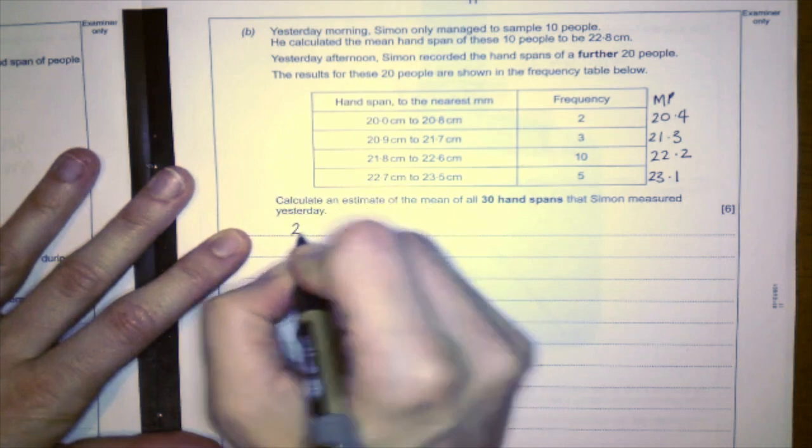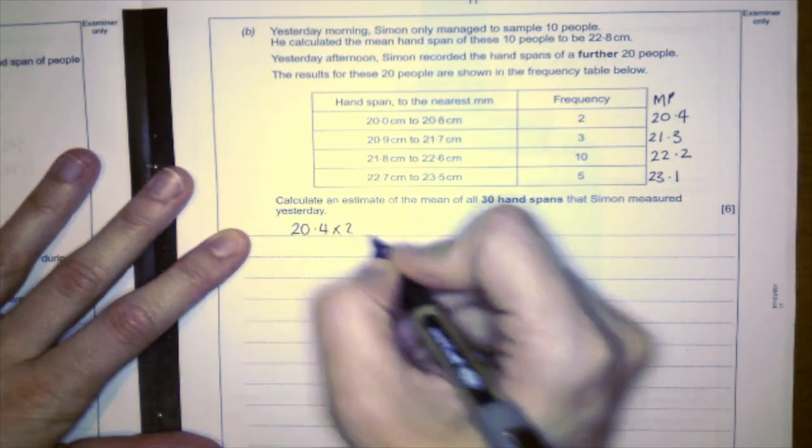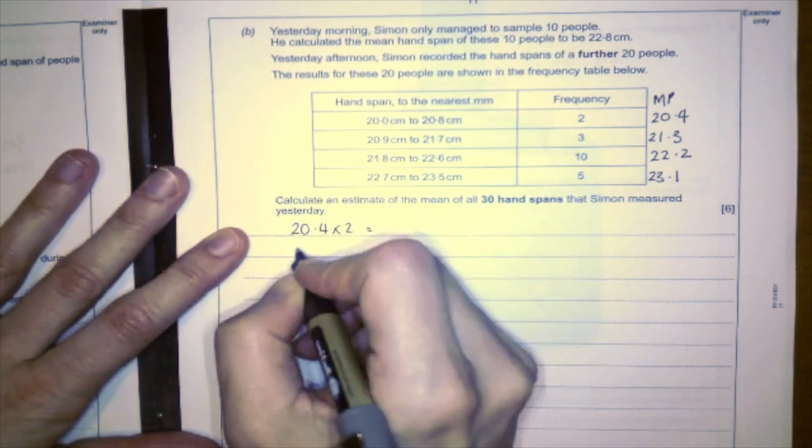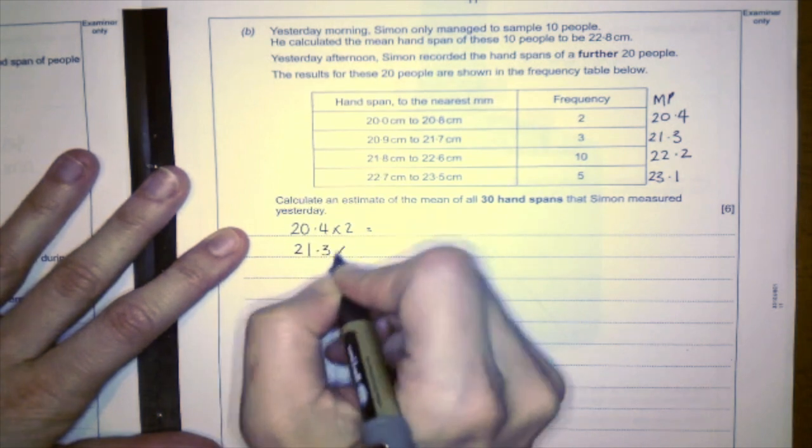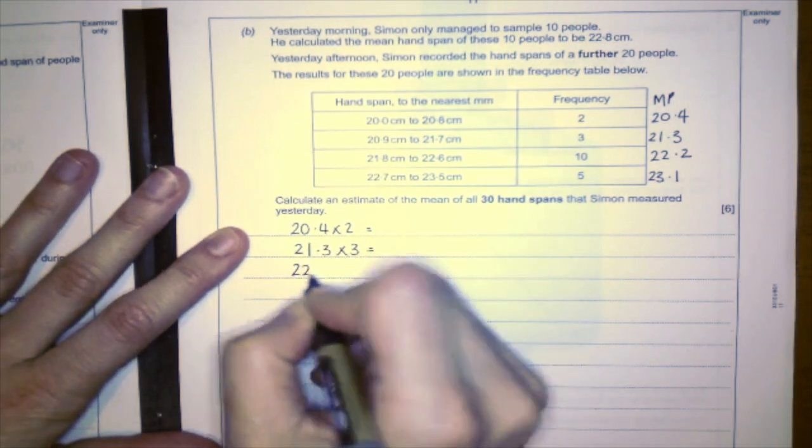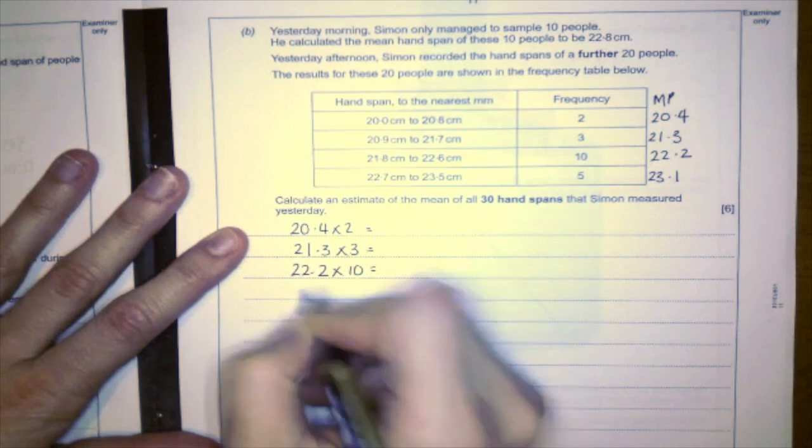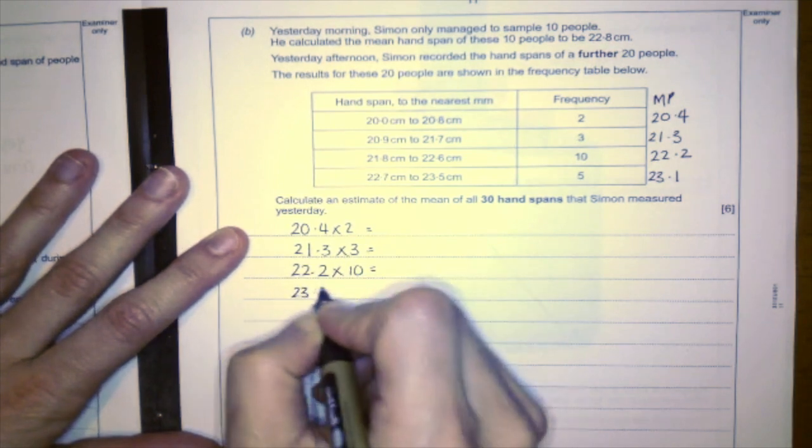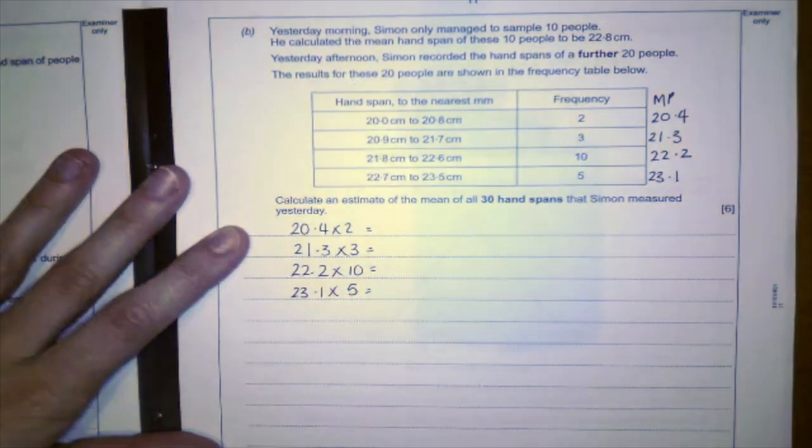I'm going to do 20.4 times 2, I'm going to do 21.3 times 3, 22.2 times 10